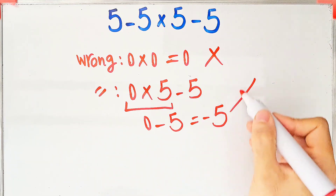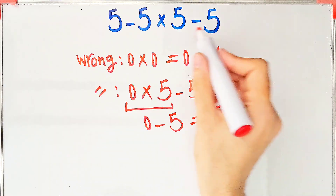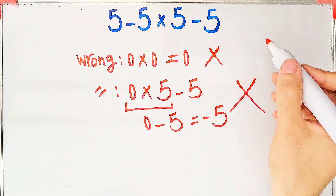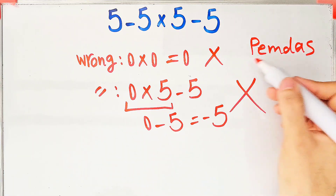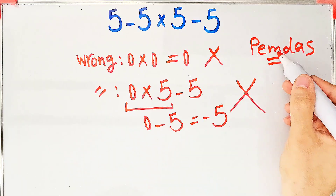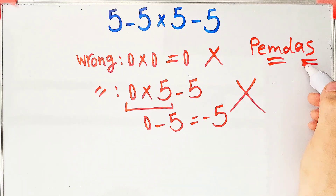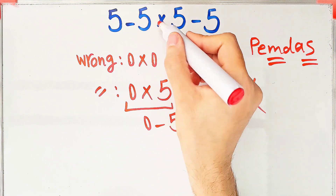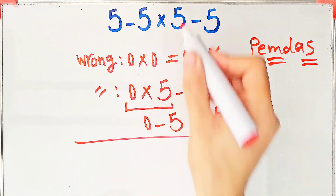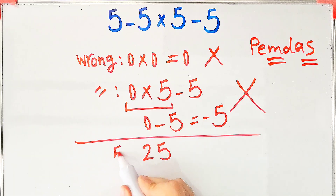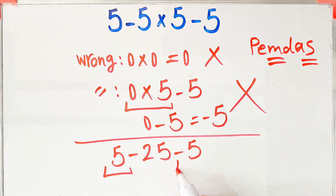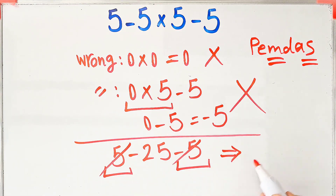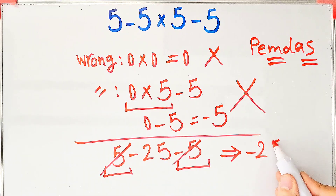To solve this correctly, we follow the PEMDAS rule. Multiplication has higher priority than subtraction, so first we simplify the multiplication. We have five minus five times five, then minus five. Five times five is twenty-five, giving five minus twenty-five minus five. Simplifying, the final answer equals negative twenty-five.